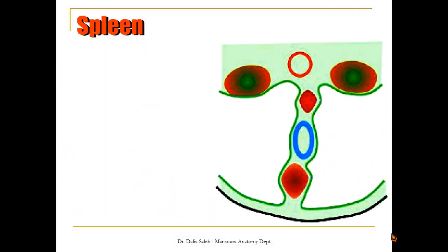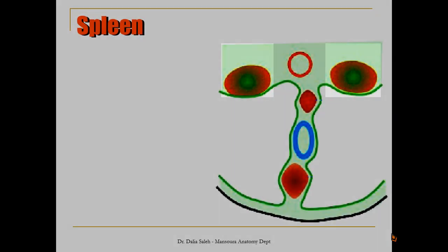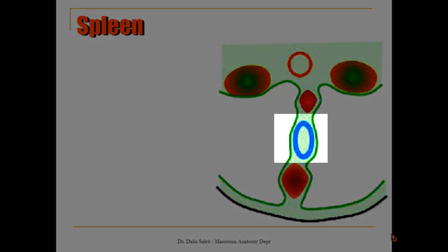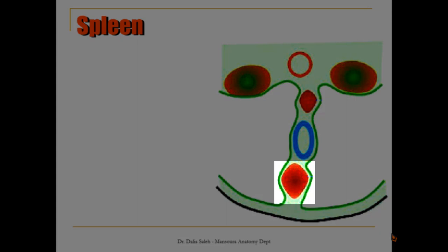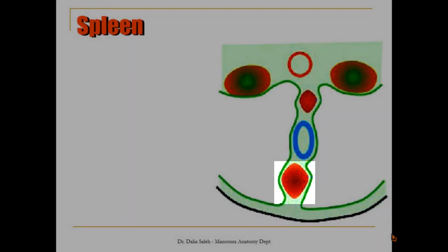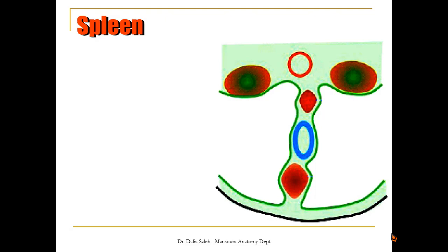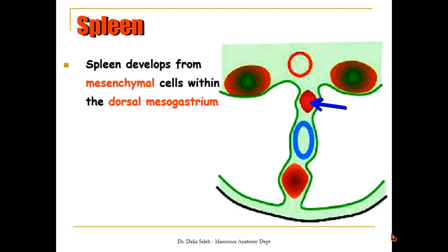To understand the development of the spleen, let's look at a cross-section of the embryo. You can see the dorsal abdominal wall, the dorsal aorta, and the two developing kidneys. In the middle is the stomach, with the dorsal mesogastrium and the ventral mesogastrium connecting the stomach to the anterior abdominal wall. The spleen develops from mesenchymal cells lying within the two layers of the dorsal mesogastrium.